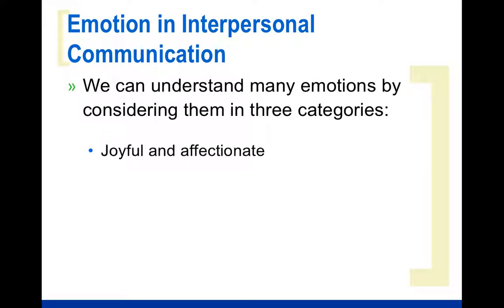We can understand emotions by basically three big categories. If you get any questions about what are the categories of emotions, these are the big overarching categories. There are joyful and affectionate ones — these are the happy ones, the ones we enjoy the most. Hostile is basically anger — this is when we get upset, frustrated, fight or flight kind of stuff. And then there's sad and anxious — this is when we're upset but not necessarily angry, more about being down and out.